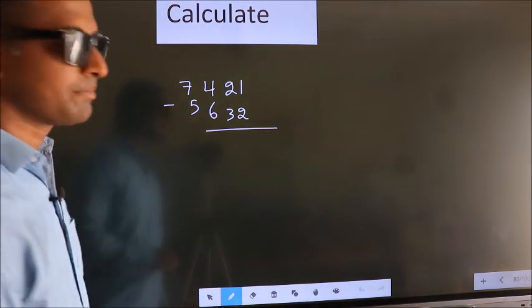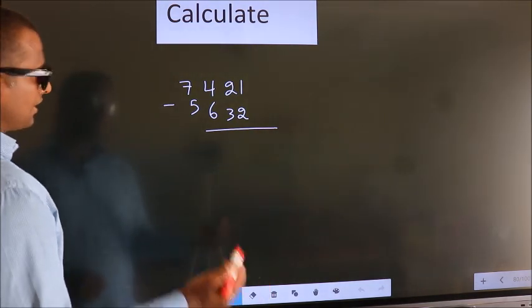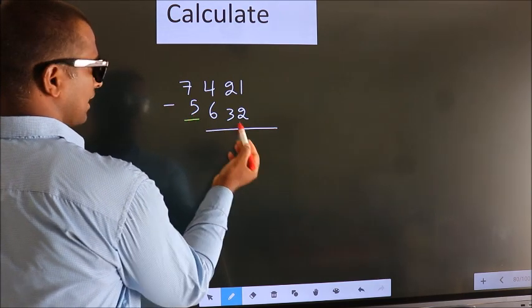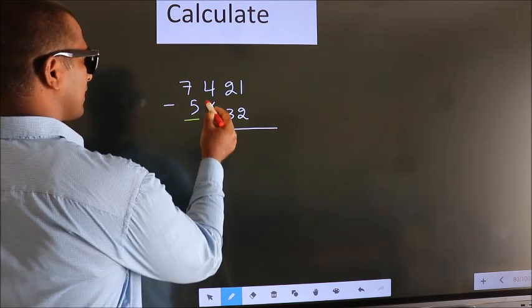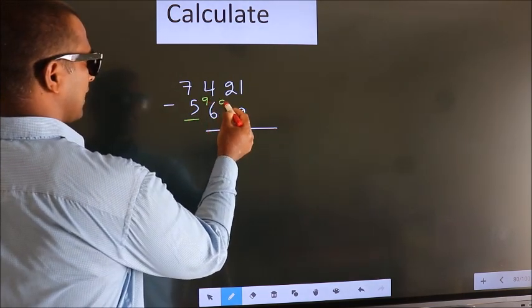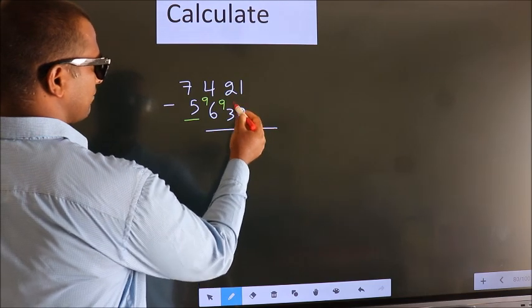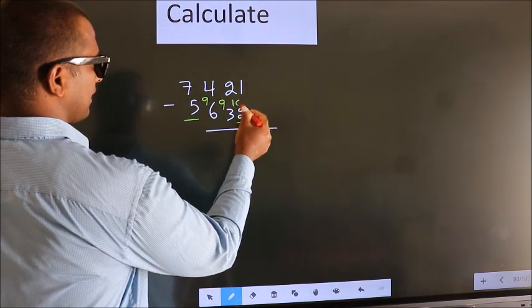See, we should leave the first digit, and here we write 9, here 9, and for the last digit we write 10.